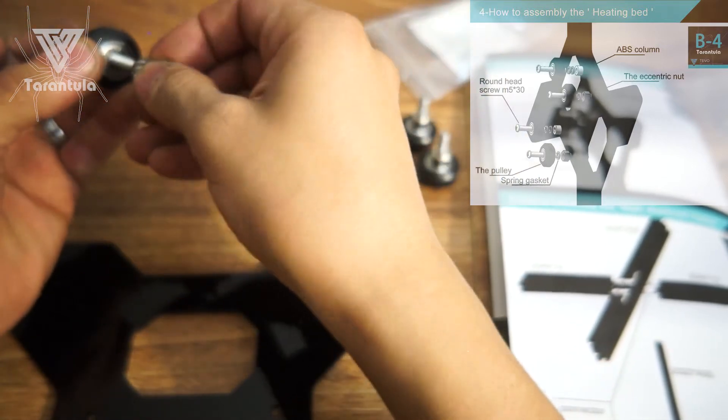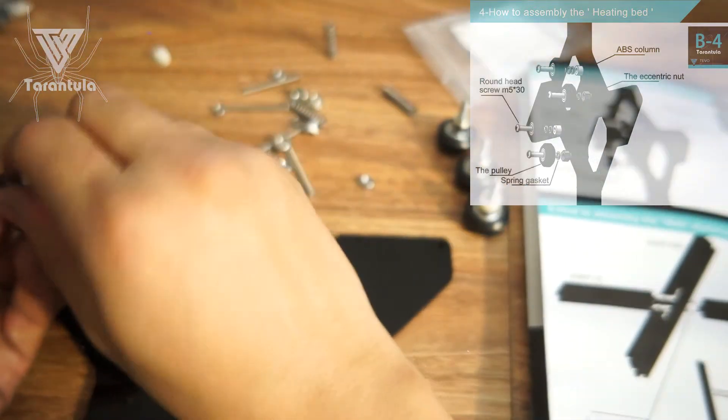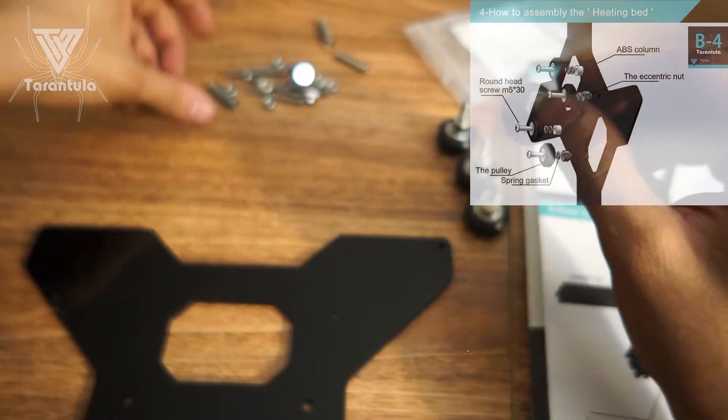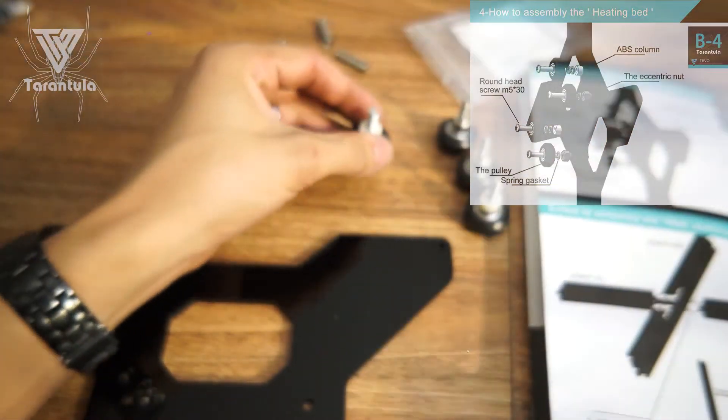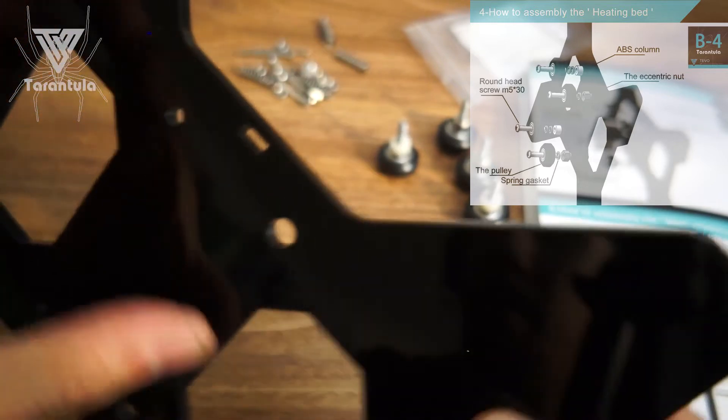Bearing, spring washers, nylon washer. The rest is going to be for the heating bed, but we don't need that just yet. So we're going to start with the eccentric nuts first. This is pretty much a mirror image.